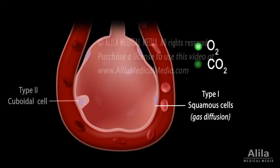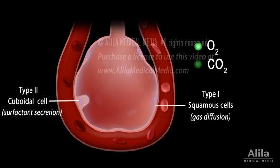There is also a small number of type 2 cuboidal cells secreting a surfactant, whose function is to lower the surface tension at the air-liquid interface and prevent the alveolus from collapsing at the end of each exhalation.